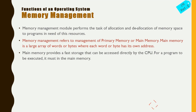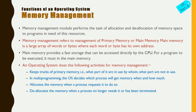The operating system does the following activities for memory management: Number one, it keeps track of primary memory — what parts are in use and by whom, and what parts are not in use. Number two, it decides which process will get memory, when, and how much. Number three, it allocates memory when a process requests it. Number four, it de-allocates memory when a process no longer needs it and has been terminated.